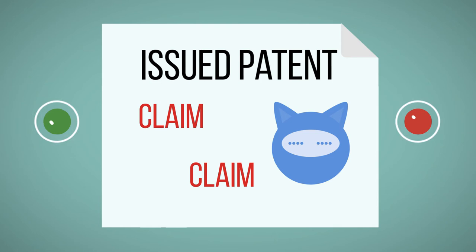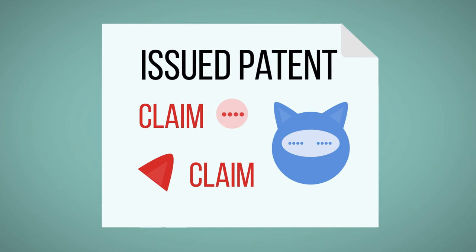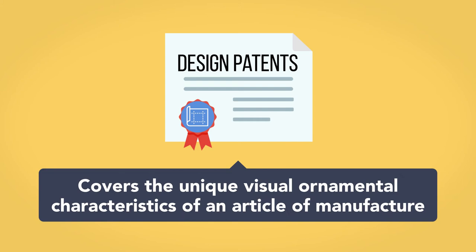The claims define the scope of the protection of the patent. Whether a patent will be granted is determined, in large measure, by the scope of the claims. Each claim technically covers a different, although usually related, invention.